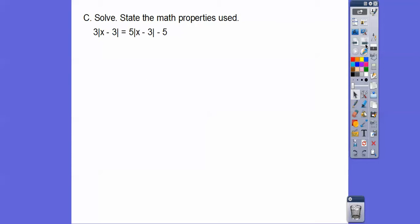Here we have, it says solve and state the math properties used. Notice these guys are the same absolute values, x minus 3. So what we're going to do is take this quantity right here and subtract it and put it over on that side right there. That's called a subtraction property. Now we'll just combine like terms. Your book likes to say distributive property, same as combining like terms right there.